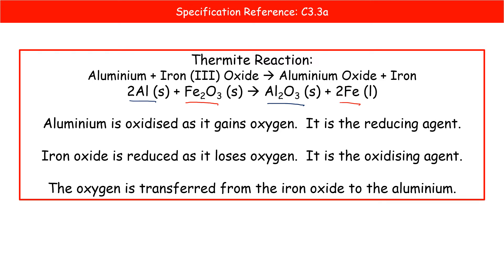But realistically, what we're doing in this redox reaction is we're transferring the oxygen from our iron oxide to the aluminium to make aluminium oxide. Hence, redox, because you've got reduction and oxidation. They're happening at the same time.